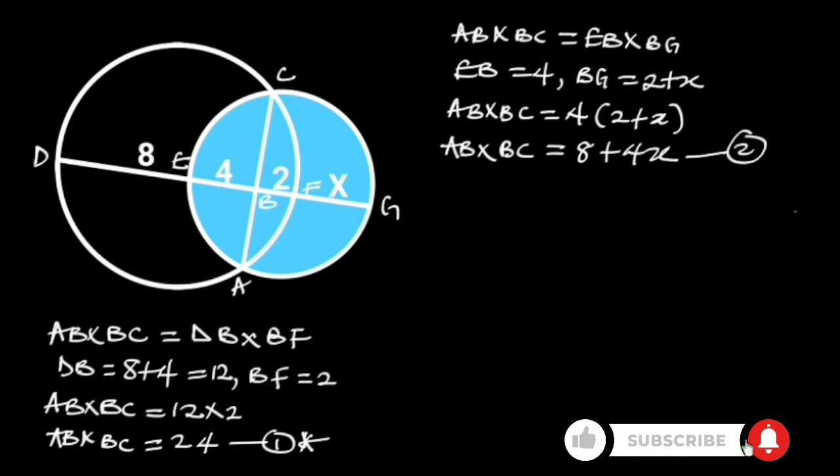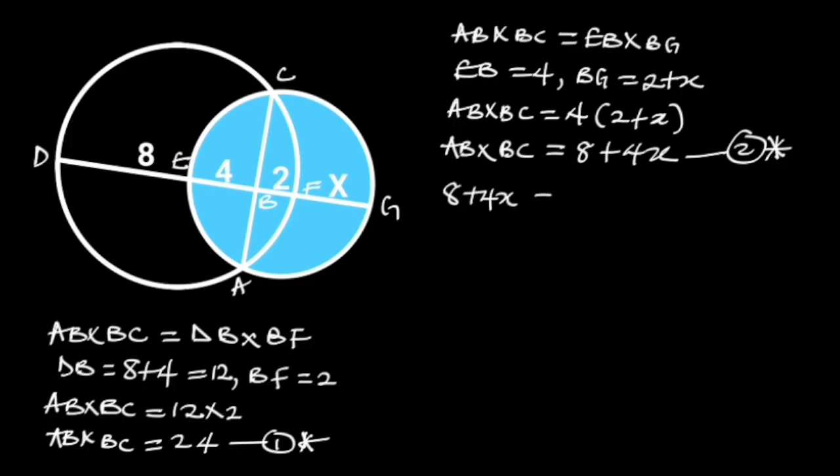Comparing equation 1 and equation 2, observe that the left sides of both equations are equal. So we can say that 8 plus 4x is equal to 24.